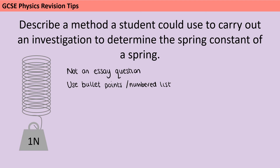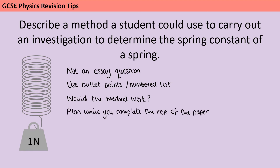When you get to the end of your method, you need to think: would this method actually work? Would it allow the student to answer the question, which here is determining the spring constant of the spring? And then finally, I would really strongly suggest that you plan this question while you're answering the rest of the paper. Find the six mark question at the start of the exam, have a read of it, and then as you answer the rest of the paper, go back and forth and write down some little notes so that when you come to actually start your answer, you have a really clear structure in your head.